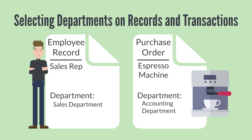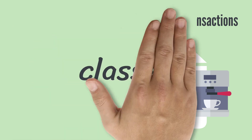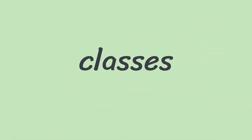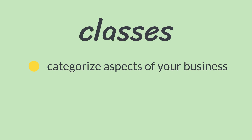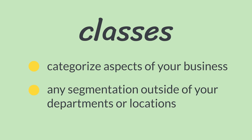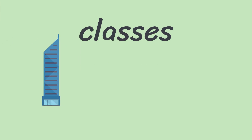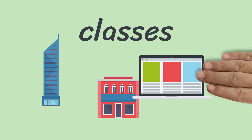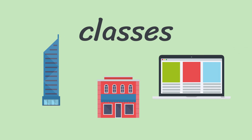Connecting departments to transactions enables you to run reports on those transactions by department. Next, there are classes. You would use classes when you want to categorize records and transactions in ways that don't fall under the departments or locations categories. For example, suppose you want to categorize your sales by corporate sales, retail store sales, and web store sales — each of those would be a different class.